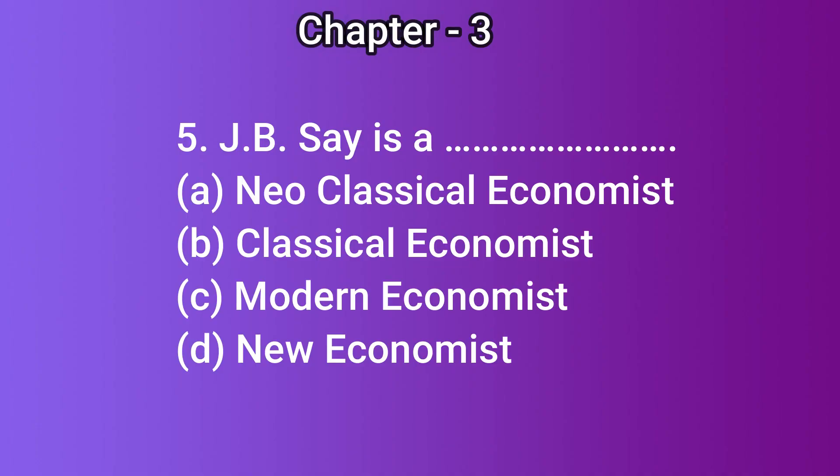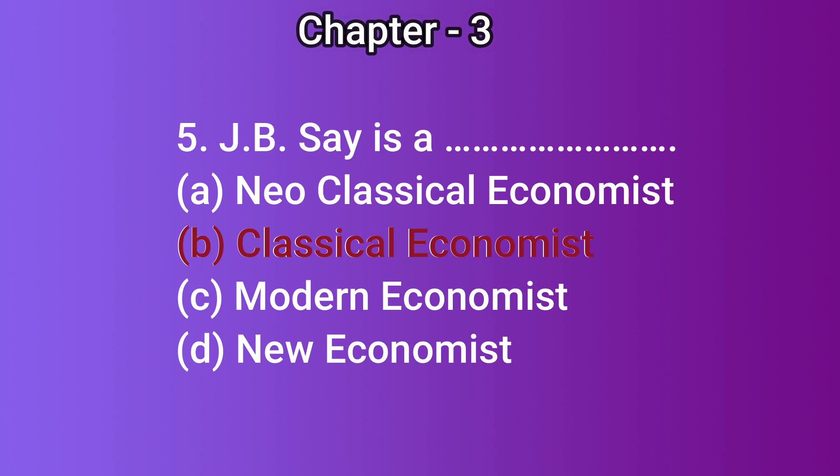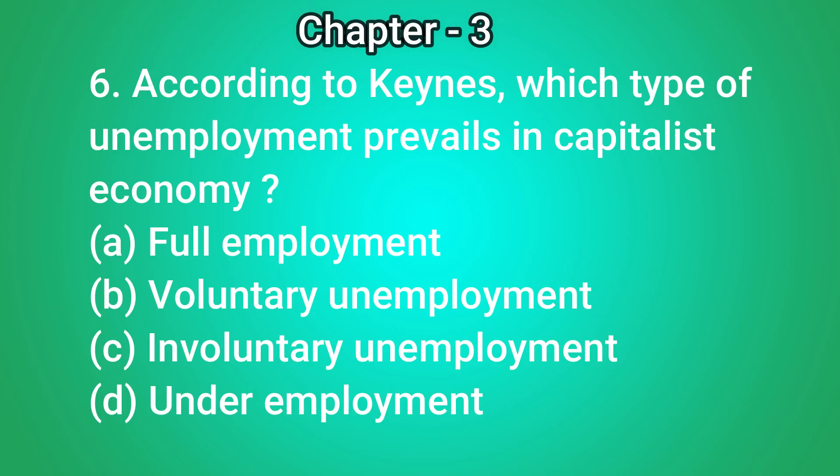J.B. Say is a — (a) neoclassical economist, (b) classical economist, (c) modern economist, (d) new economist. The correct answer is (b) classical economist. Question number 6: according to Keynes, which type of unemployment prevails in a capitalist economy? (a) full...